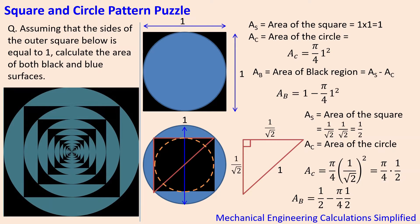Hello friends, welcome to my channel. Today I take you to a very interesting puzzle I received from one of my friends. It goes like this: assuming that the sides of the outer square is equal to one, calculate the area of both black and blue surfaces. The black surface is on the corners, and we are asked to calculate the summation of all such black surfaces and all such blue surfaces.